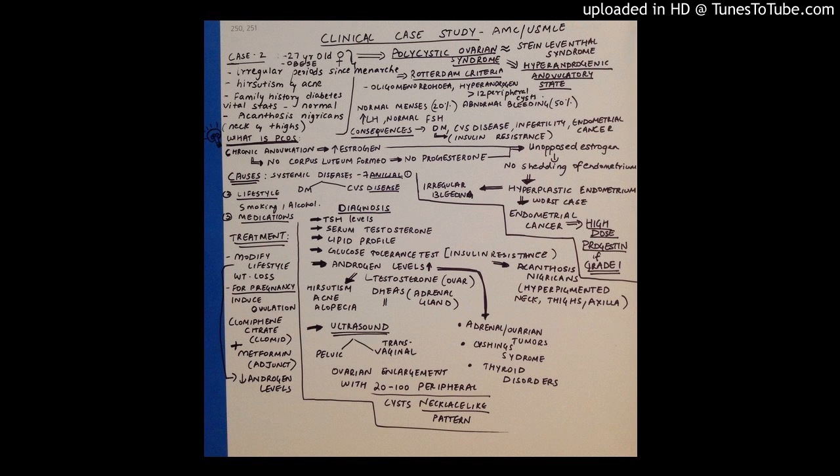Okay, so in today's case you have a patient who's a 27-year-old woman. She comes to your clinic and on her appearance she appears to be obese. She complains of irregular periods since the time her periods started, and apart from that she complains of hirsutism and acne, that is facial hair and acne. She also has issues with darkened skin or hyperpigmented areas like the neck and inner thighs.